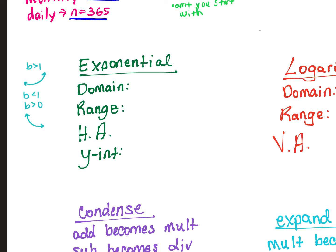Your domain for exponential functions is automatically all real numbers — from negative infinity to positive infinity. Your range depends on your horizontal asymptote, which is whatever is plus or minus the number at the end — that vertical shift up or down. That is your horizontal asymptote.